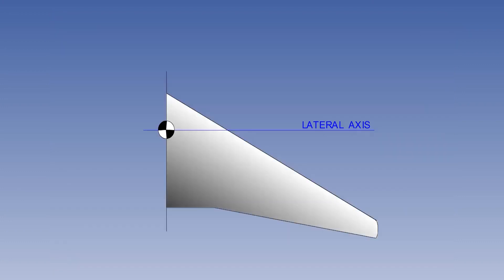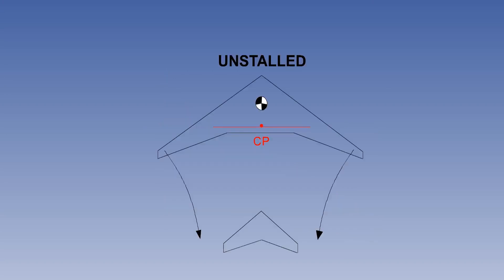A swept wing will allow higher maximum speed but has a greater tendency than a straight wing to stall first near the tips. This loss of lift at the tips moves the centre of pressure forward and inward giving a destabilising nose up pitching moment.